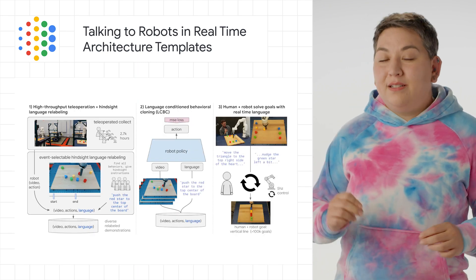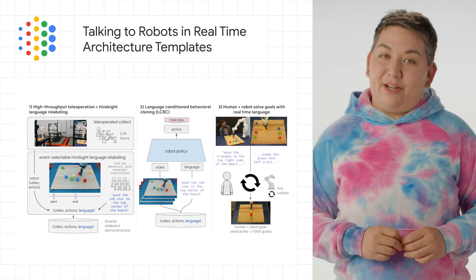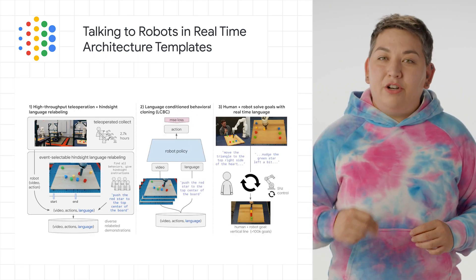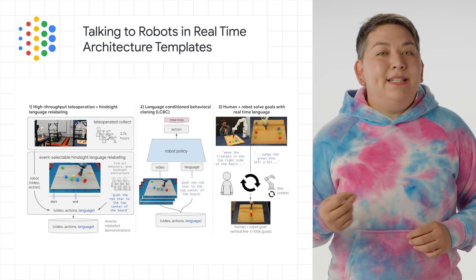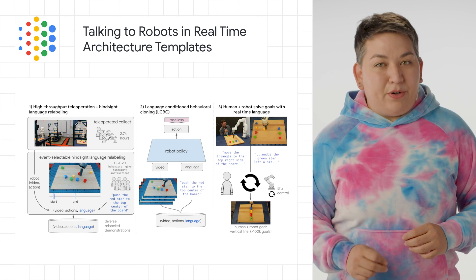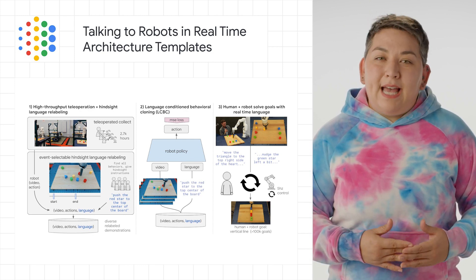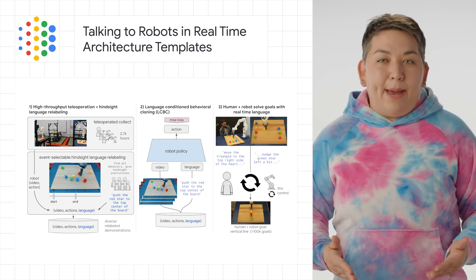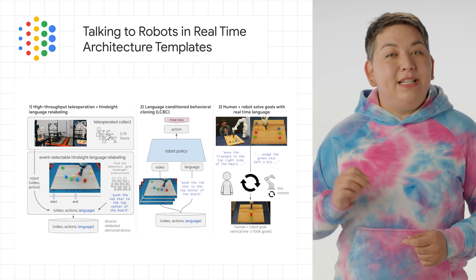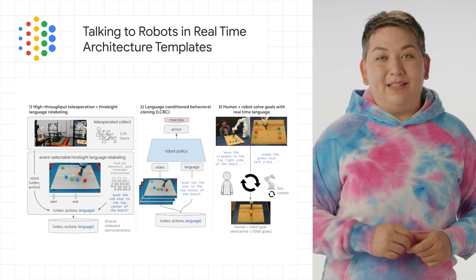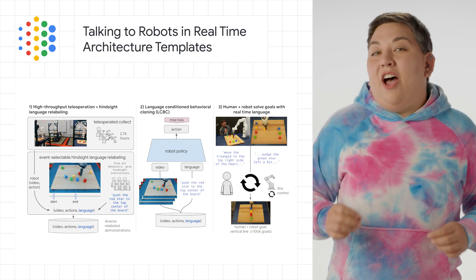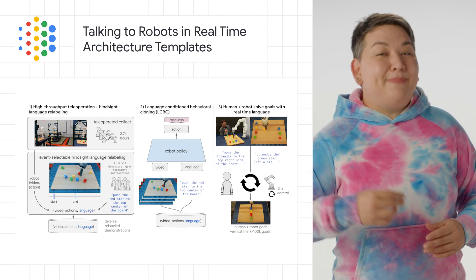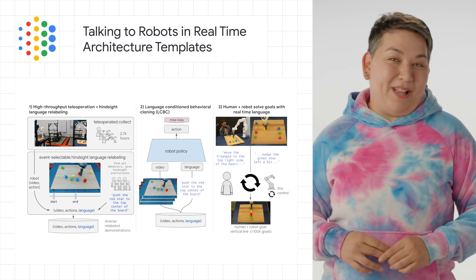The framework is called Interactive Language, and it processes large-scale imitation learning frameworks for processing real-time, open vocabulary, language-conditionable robots. In other words, you can tell a robot to make a smiley face out of the blocks.